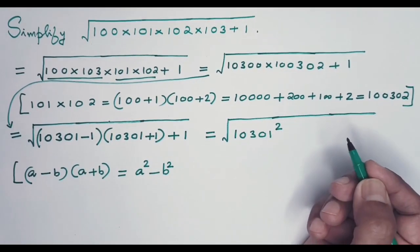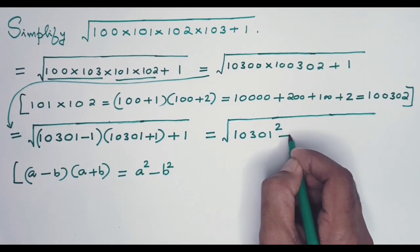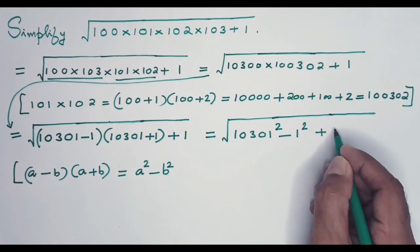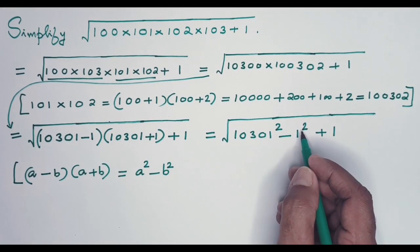Then b, instead of b we have 1, that means minus 1 squared. Then there comes this last term plus 1. Now look at this: minus 1 squared is just 1, then there is plus 1. So these two will cancel out.